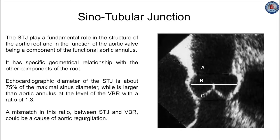The sinotubular junction joins upwards the tubular portion of the aorta, and downwards the sinuses of Valsalva and the aortic commissures, with which it is in direct continuity. On the aortic lumen, the sinotubular junction usually represents a slightly raised ridge or thickened aortic wall, while on the outside it is smooth and usually identifiable after dissection of the upper part of the aortic root.